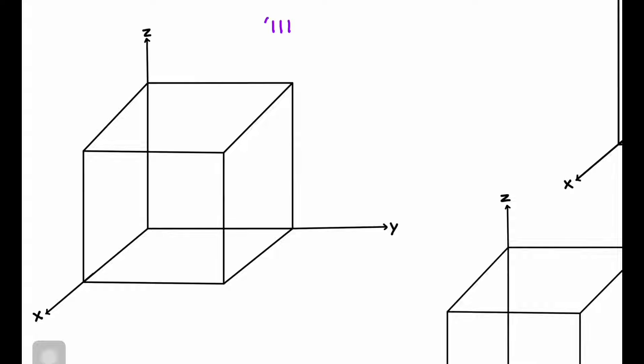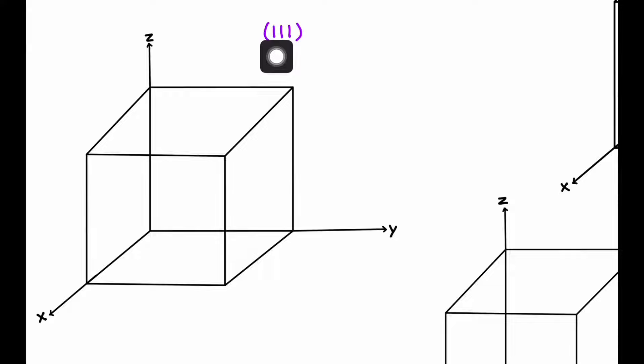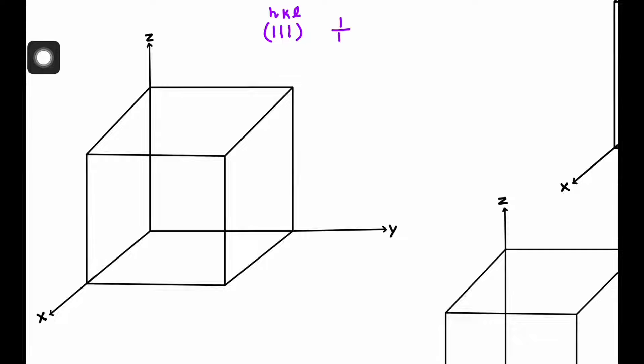For the 111 plane, the Miller indices are 1, 1, and 1 — that is H, K, and L. First we have to find the point of intersection of this plane on the X, Y, and Z axes. The point of intersection will be just the reciprocal of the Miller indices. So it will be 1 upon 1, 1 upon 1, and 1 upon 1, that is 1, 1, 1.